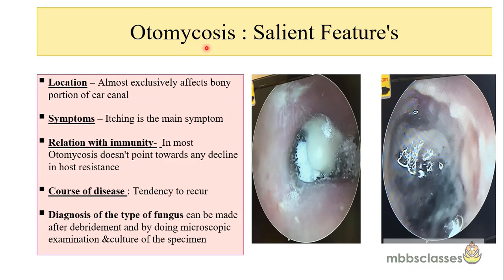The salient features of otomycosis: first, regarding location, it almost exclusively affects the bony portion of the ear canal. Among symptoms, unlike other causes of otitis externa, itching is the main symptom. Regarding immunity, in most cases of otomycosis the presence of the disease does not point towards any decline in host resistance, unlike fungal infections of the nose. The disease has a tendency to recur. Diagnosis of the fungus type can be made after debridement by microscopic examination and culture of the specimen.